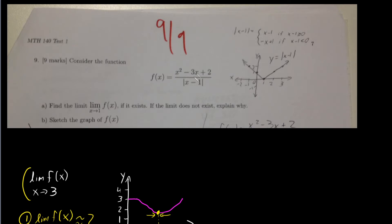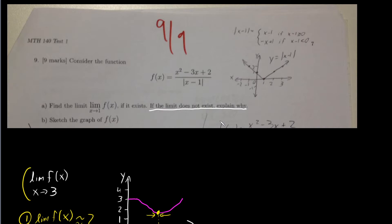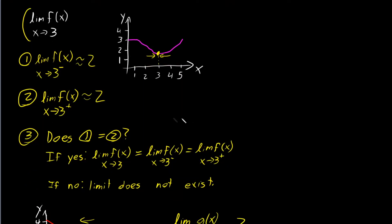Now let's look at the midterm exam question. The function is f(x) = (x²−3x+2) / |x−1|. The question asks: find the limit of the function as x approaches 1 if it exists, and if the limit does not exist, explain why. Part B asks us to sketch the function. We already know the explanation for when a limit doesn't exist — when the left-hand limit does not equal the right-hand limit.